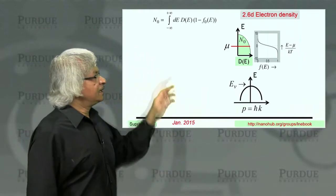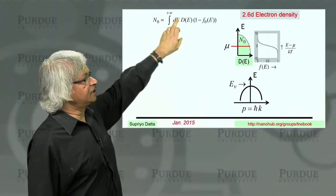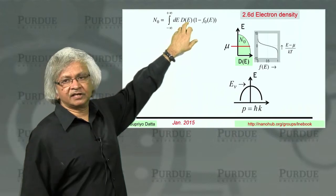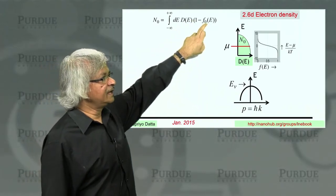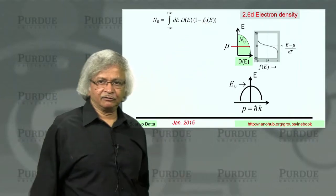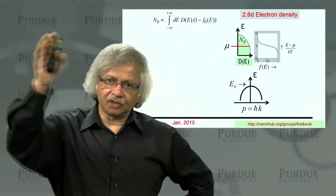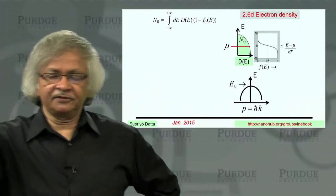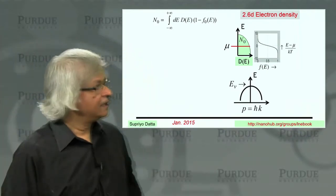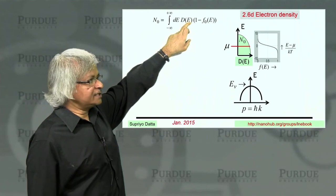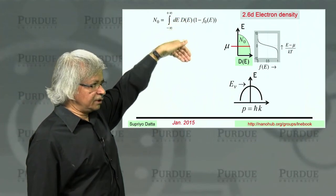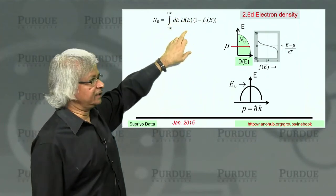That is, N0 is actually not integral of density of states times the Fermi function, but rather its density of states times 1 minus the Fermi function. Fermi function tells you whether a state is occupied. 1 minus F tells you if it's empty.